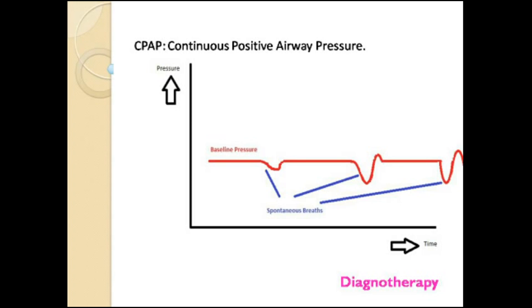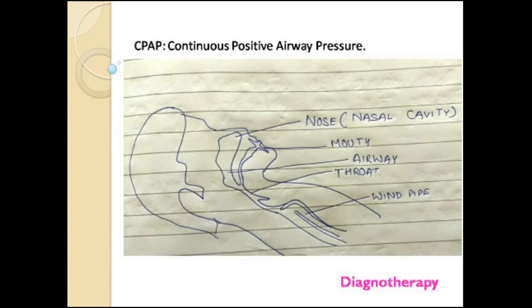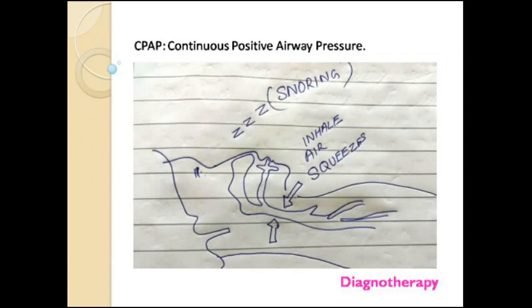Now let's see how CPAP works in OSA. Air can enter our lungs from the nose or the mouth, goes to the airway, then through the throat and the windpipe. But in some cases, if the airway gets squeezed, it produces a vibrating sound — that is snoring.